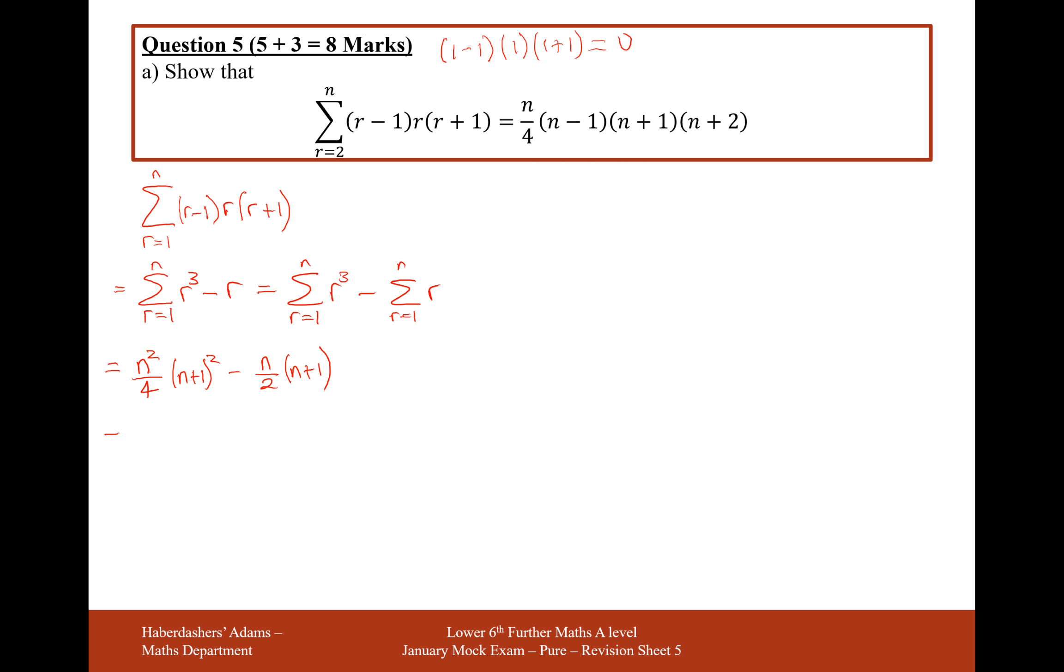And the next thing we need to do is collect all our terms together and give it one algebraic expression. So we're going to need to factorise this. Now the first step that I go through before I factorise is I create equal denominators so that it's much easier to factorise out that divisor. So in this case here I'm going to factorise out a quarter,